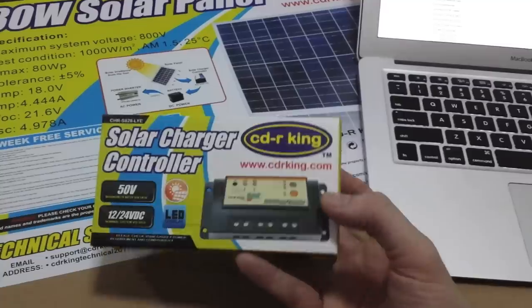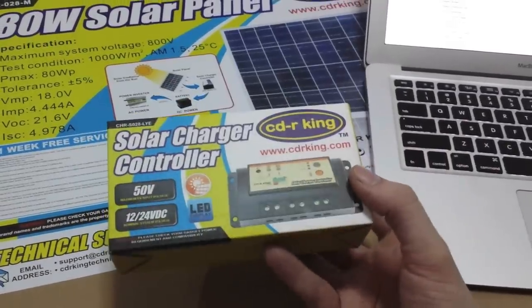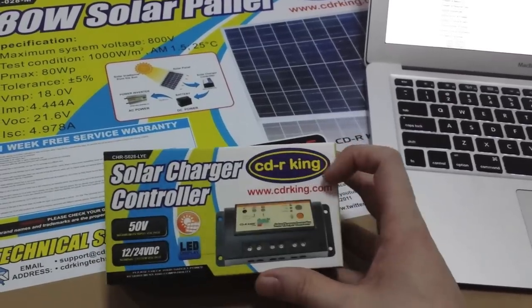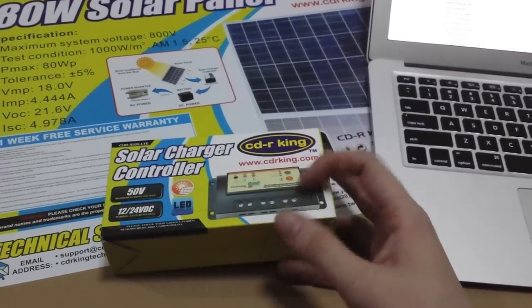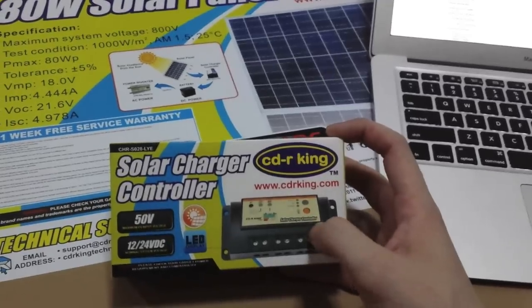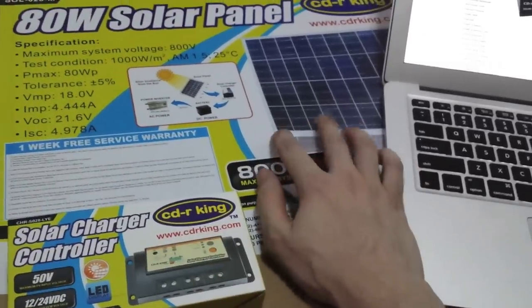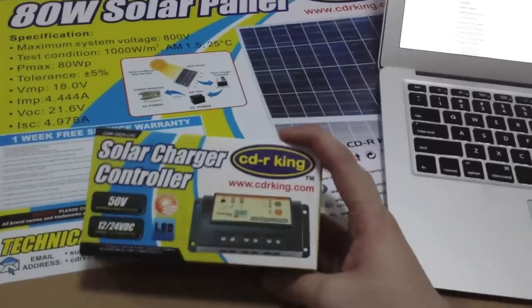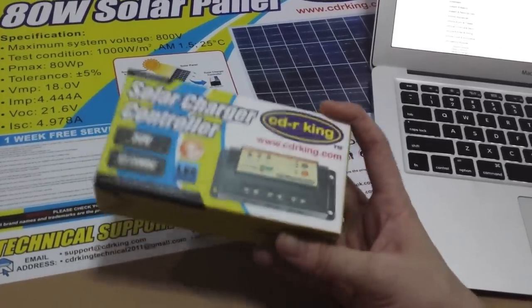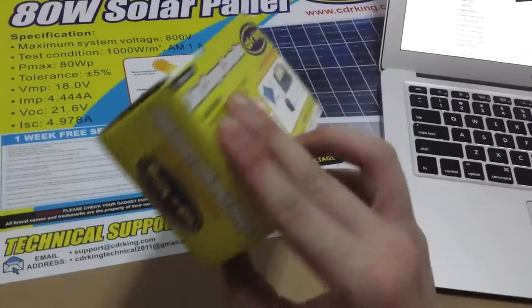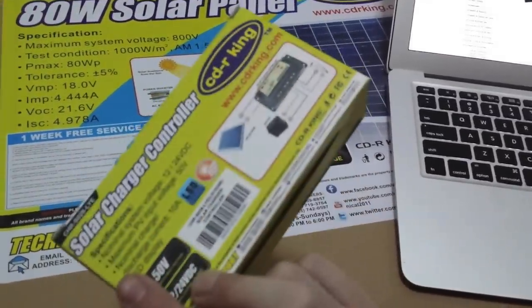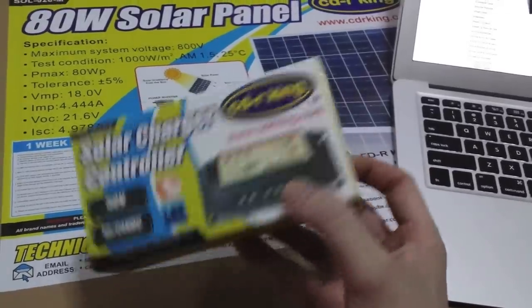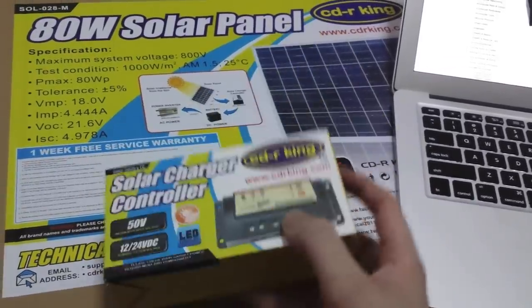But then to be honest, I probably just want a basic charge controller because CDR King products, they're just rebrands of generic anyway but they're generally not that great. At least with the solar panels there's not too much that can go wrong. But with anything electronic you probably want to keep it as basic as possible. So it's probably a good thing that I don't have the AC inverter and the USB ports and everything like that.